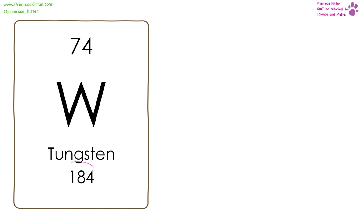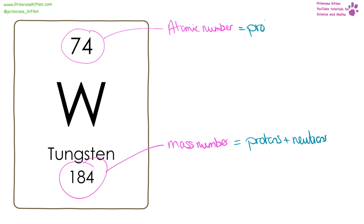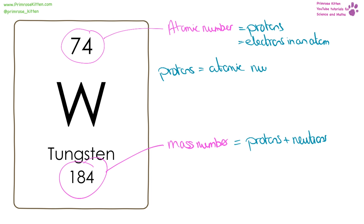On the periodic table you will see two numbers. The larger number is the mass number and the smaller number is the atomic number. It does not matter where these are located — different books and exam boards put them in different positions. The mass number equals the number of protons plus the number of neutrons. The atomic number equals the number of protons, and also equals the number of electrons in an atom.